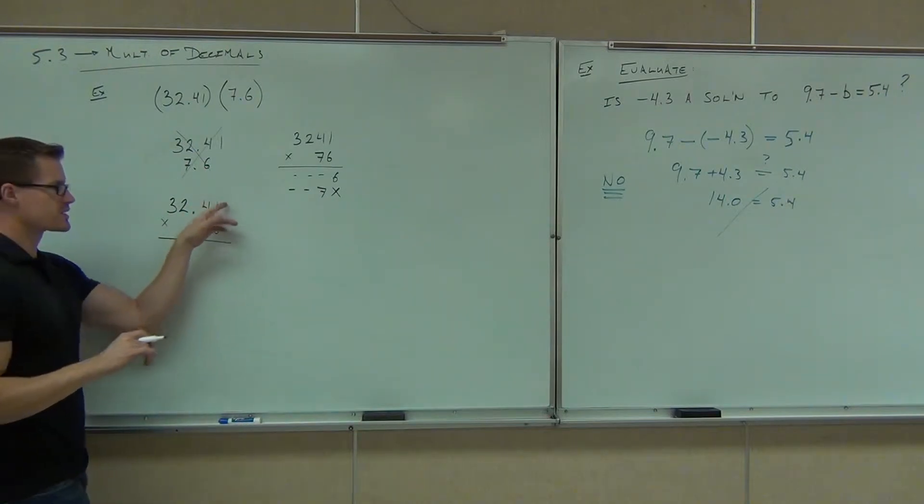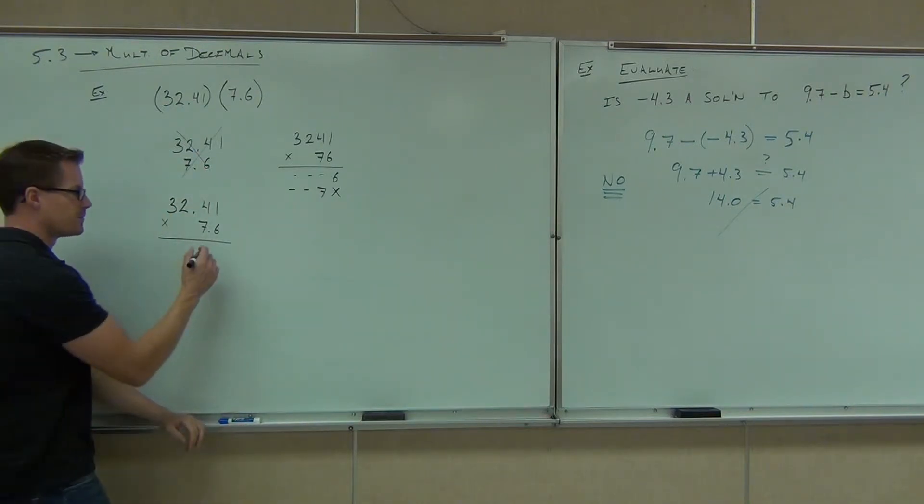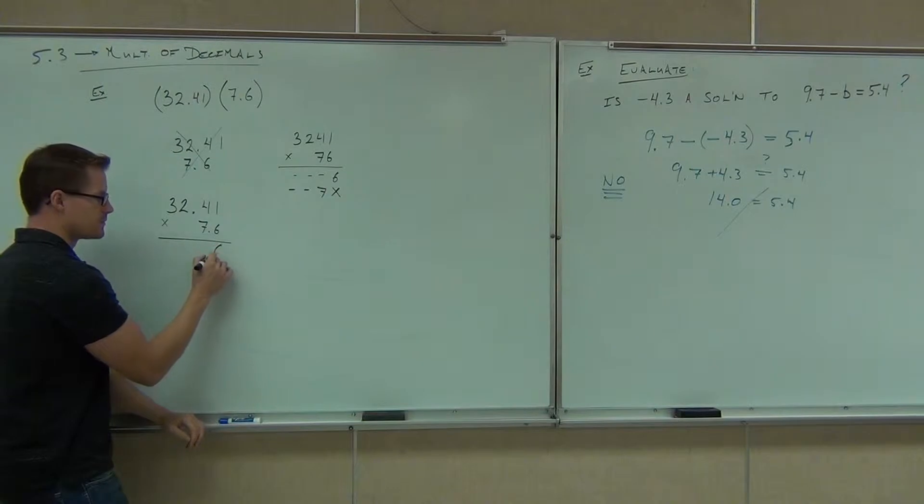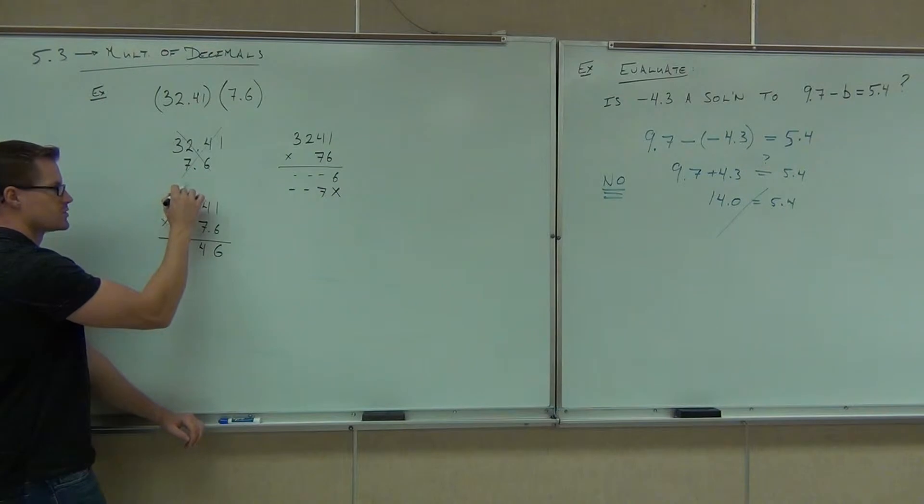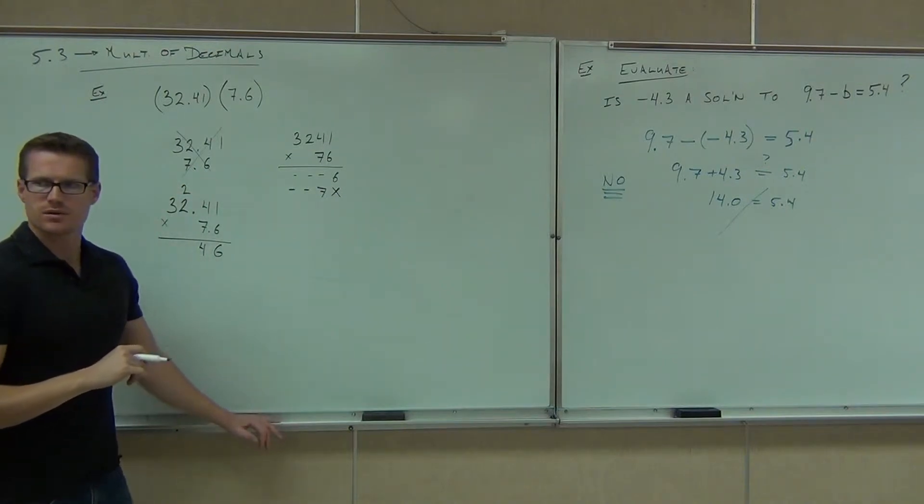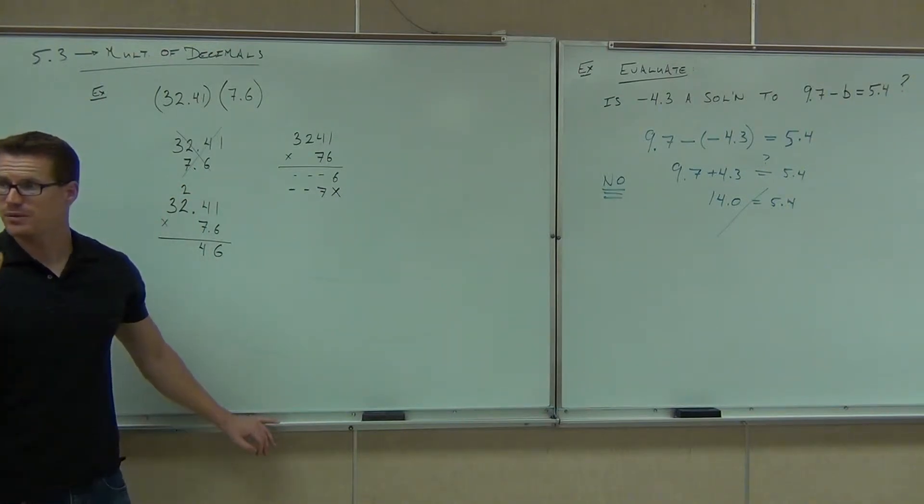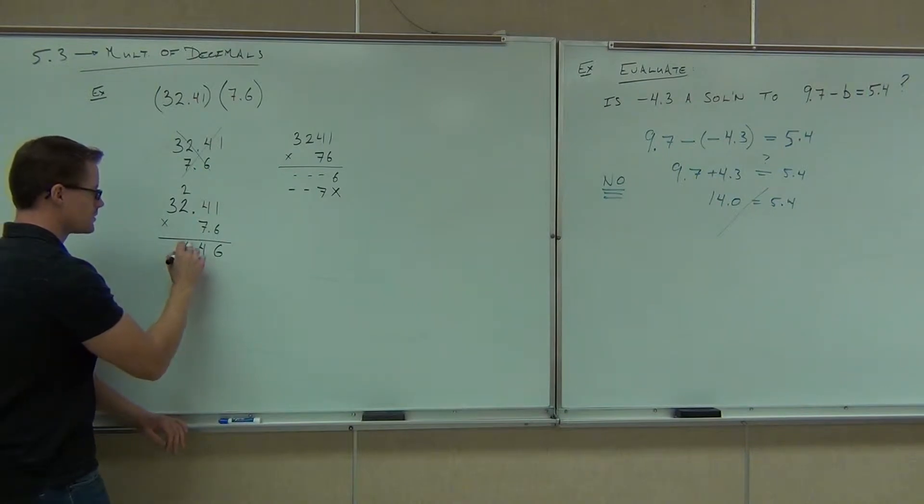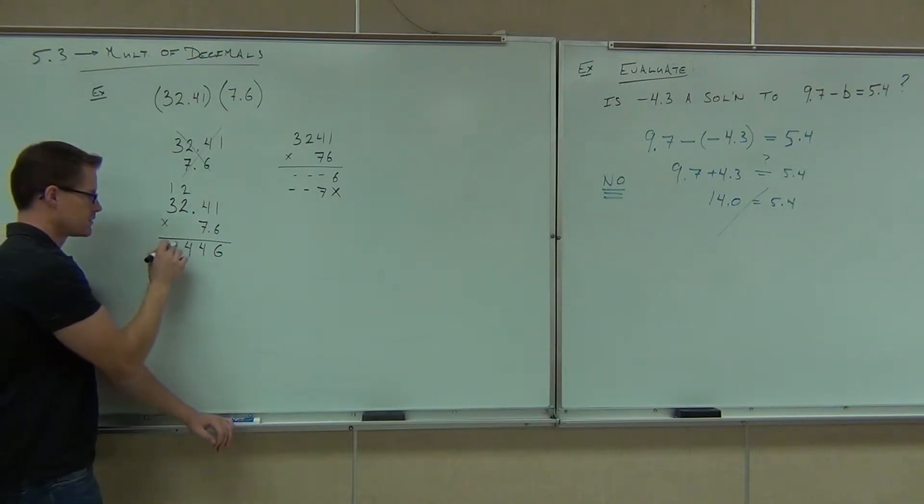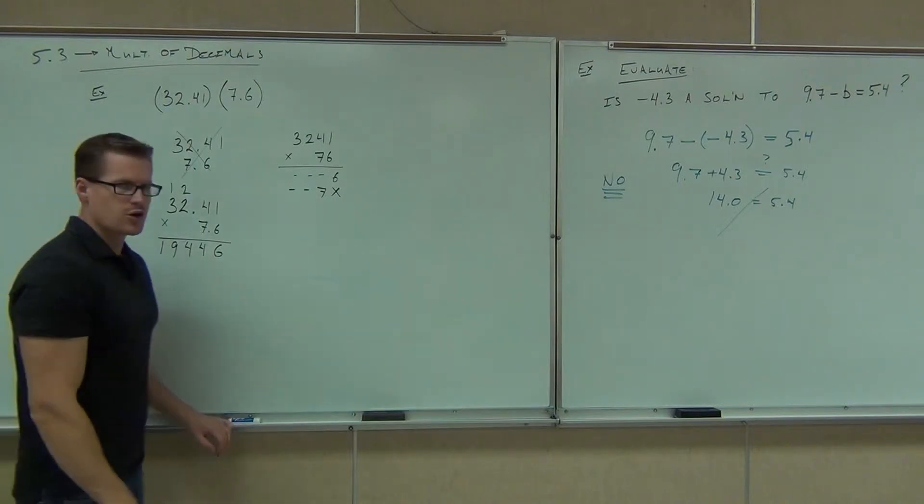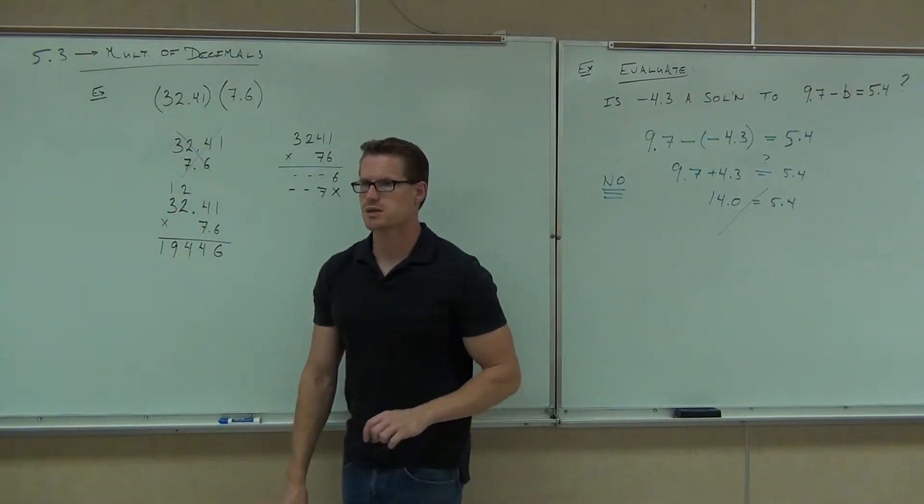What are we going to get when we multiply the 6 times my top number? 6. 6. Great. What's next? So 2. What's next, ladies and gentlemen? So we multiply and then we add that 2. Good. We'll carry the 1. Then what do we get? 2. Are you okay getting 1, 9, 4, 4, 6? Yes. All right.